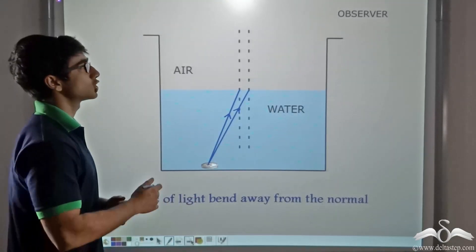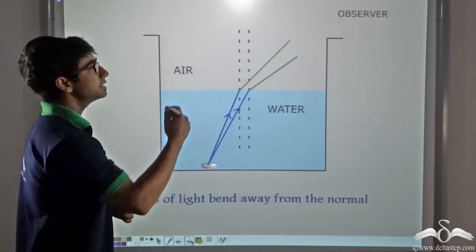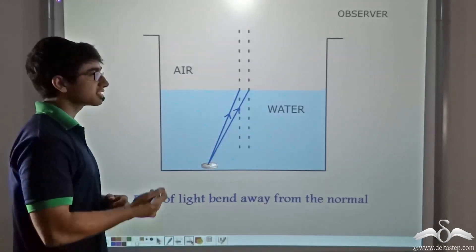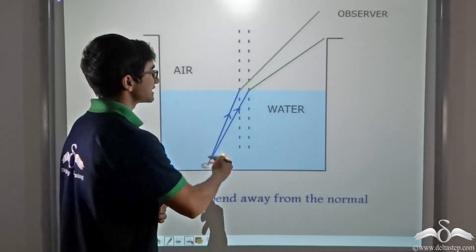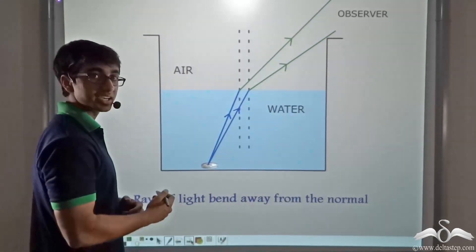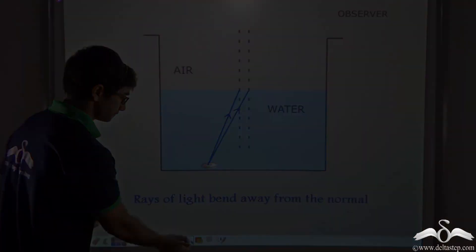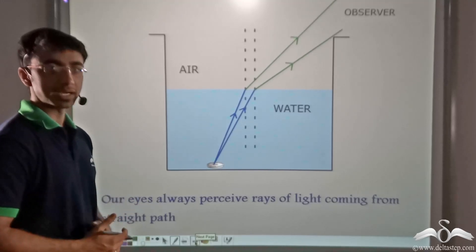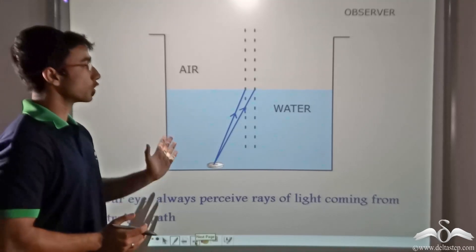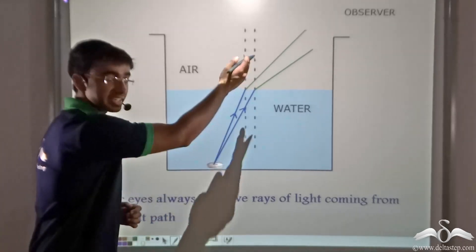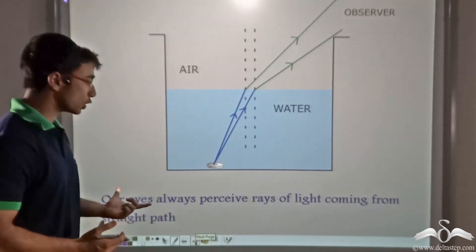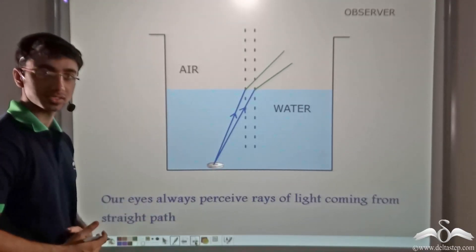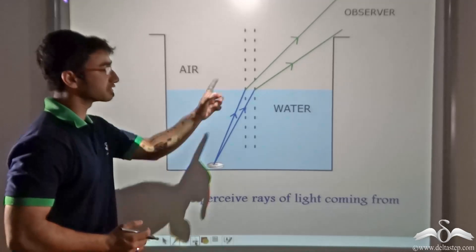Now obviously for an observer, he will think that the light rays are coming from a straight path, because an observer cannot observe the zigzag path that the light rays are taking. So for any observer, since he or she will not be able to perceive this zigzag ray — because our eyes always perceive rays of light coming from a straight path — we need to extrapolate these refracted rays.